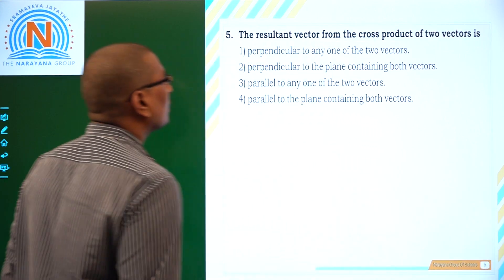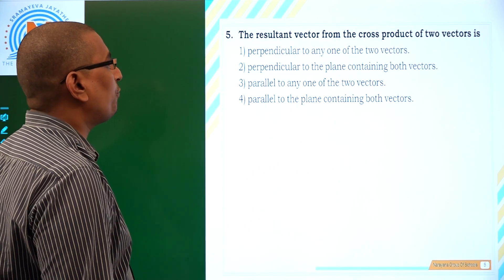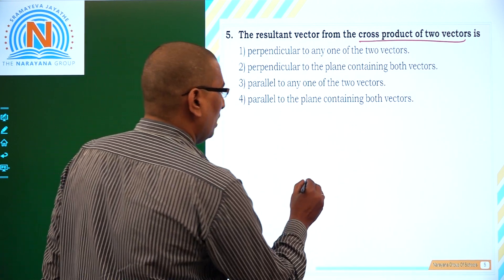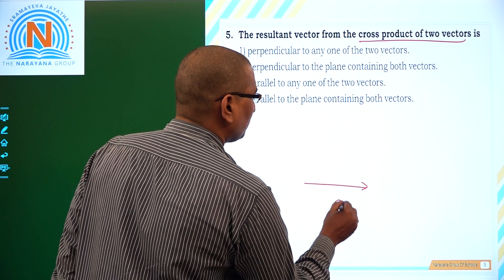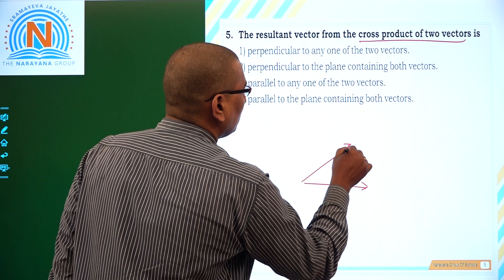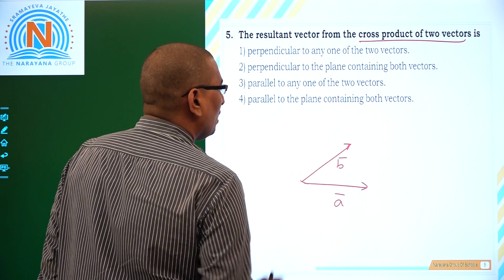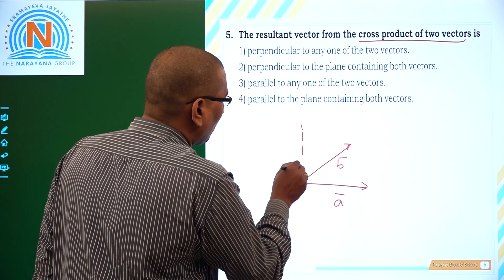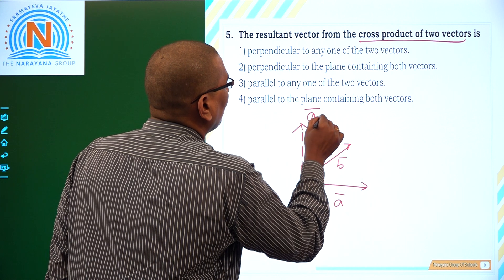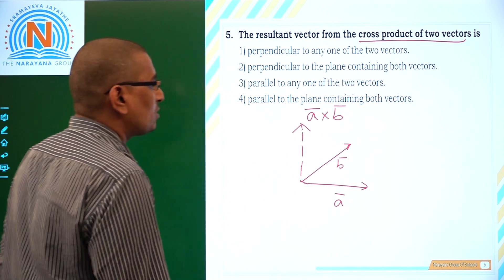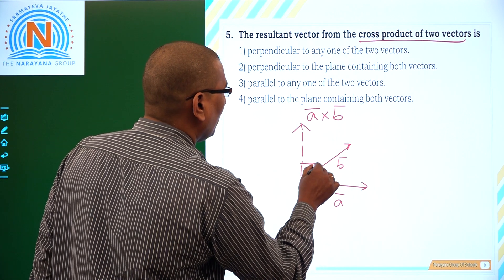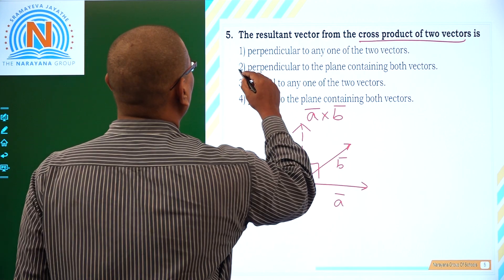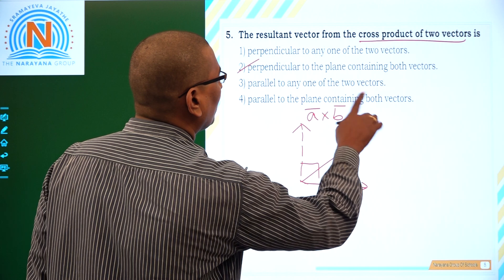The result vector of the cross product of two vectors. So if you consider two vectors, a bar and another vector, b bar, then the cross product of a bar and b bar will be perpendicular to the plane containing ab. So a bar cross b bar will be perpendicular to the plane containing a and b. So which is our option 2. Perpendicular to the plane containing both the vectors.